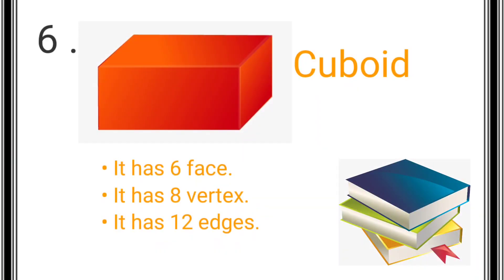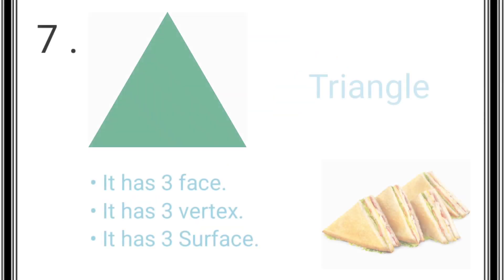The next shape is cuboid. A cuboid has six faces, eight vertices, and twelve edges. Example: book.